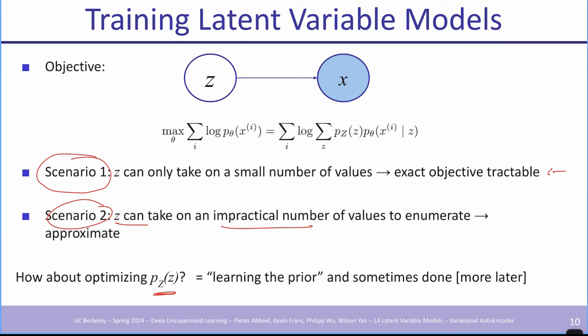A Gaussian can still be a little restrictive. If p(z) is just a Gaussian, every latent variable is independent. For example, whether there's a dog, a cat, a horse, or an airplane in the scene — you'd expect correlations: when there's a dog, it might be more likely there's another dog; when there's a car, maybe another car because it's a street scene. If you force p(z) to be a Gaussian, you force every variable in z space to be independent, failing to capture such dependencies. So even though simplicity is desirable, too simple might not allow a good model.